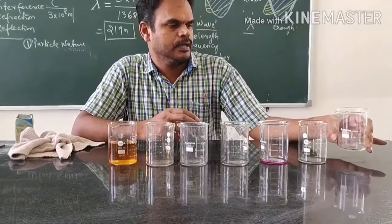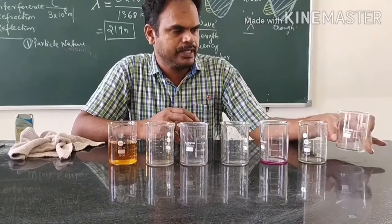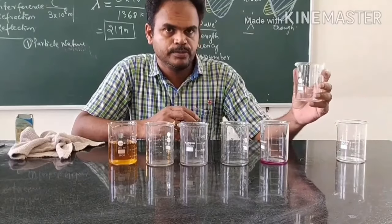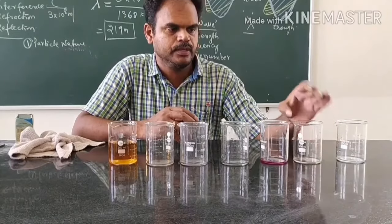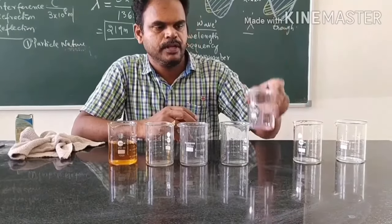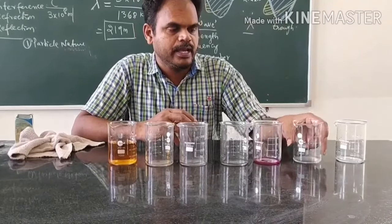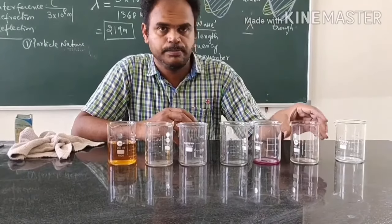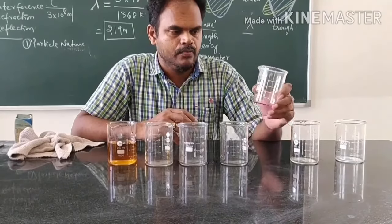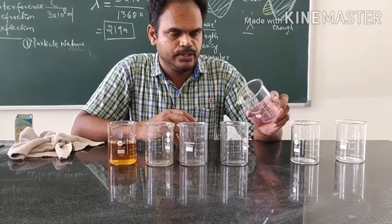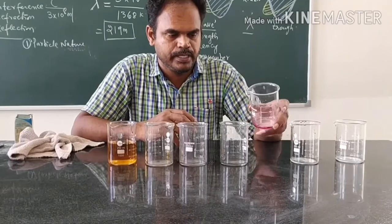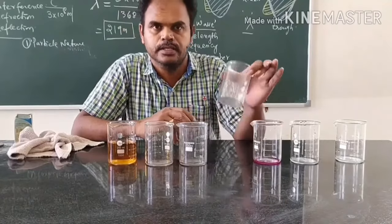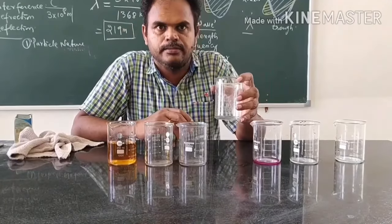I have taken water in the first beaker. In the second beaker, I have added two drops of sodium hydroxide. In the third beaker, I have taken phenolphthalein indicator. When I add the base to the phenolphthalein indicator, it turns pink. When I add this pink solution to an acid, I will get a colorless solution because phenolphthalein does not show color in acid.